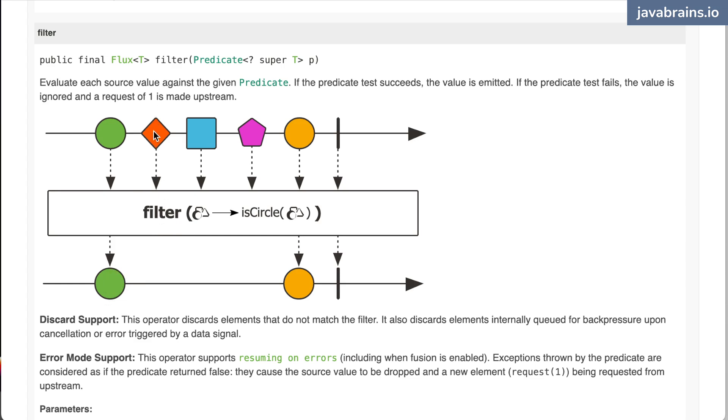This one, the predicate applies, it's found to be false, so this will not have an item triggered. And so on until the next circle comes. Here, this is going to pass through because the predicate is true. And then the completion event is going to result in a completion event of the new flux.